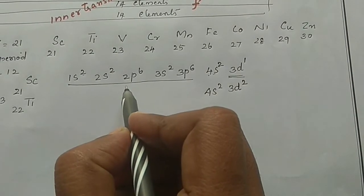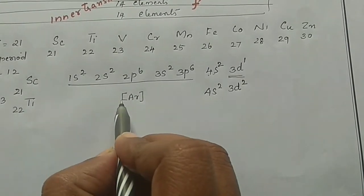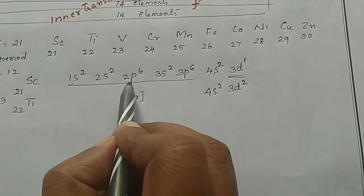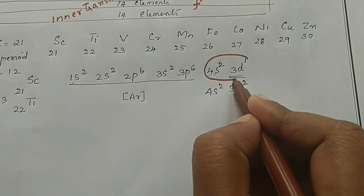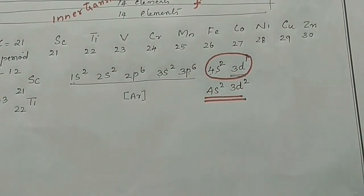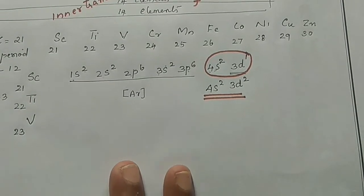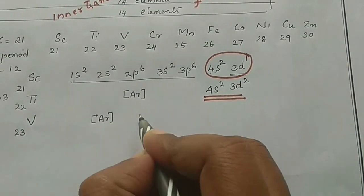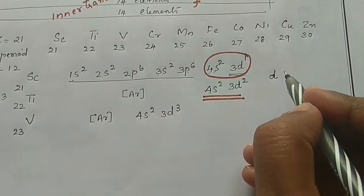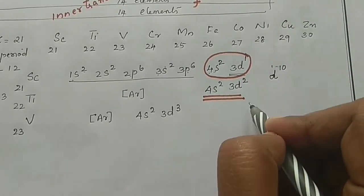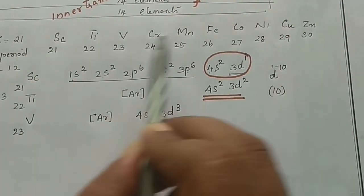The electronic configuration of Argon is 1S2, 2S2, 2P6, 3S2, 3P6. The valence outer electronic configuration is written in terms of Argon. For Vanadium, atomic number 23, the Argon electronic configuration is followed by 4S2, 3D3. The D orbital can be filled with up to 10 electrons, so these 10 elements form a family filled with D electrons.